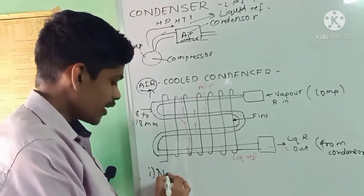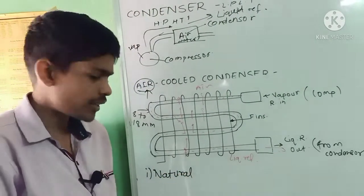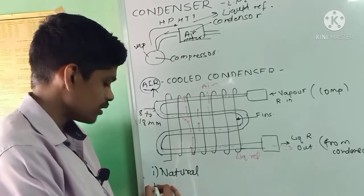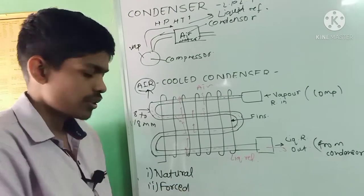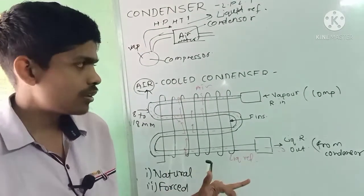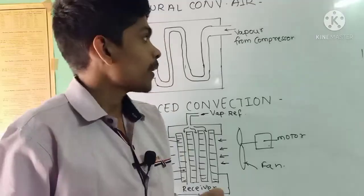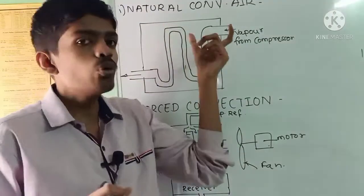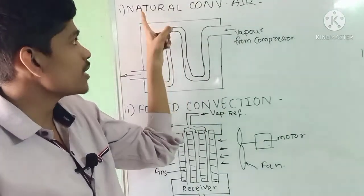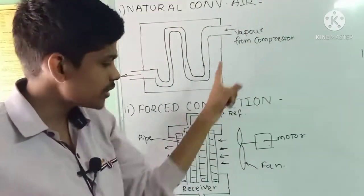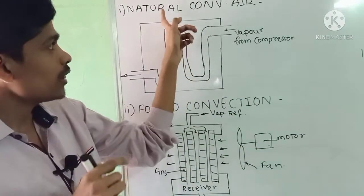In the air-cooled condenser, there are two types: one is the natural convection air-cooled condenser and the other is the forced convection air-cooled condenser.